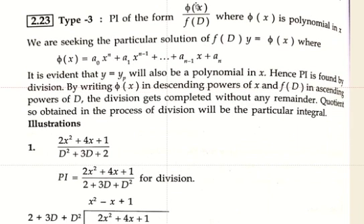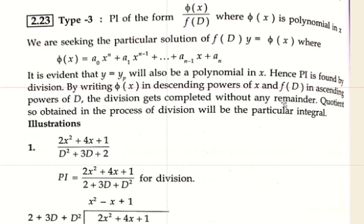In Type 3, the particular integral is of the form P(x)/f(D), where P(x) is a polynomial in x. We seek the particular solution of f(D)·y = P(x), where P(x) = a₀xⁿ + a₁xⁿ⁻¹ + ... + aₙ. It is evident that yp will also be a polynomial in x. Hence, the particular integral is found by division — by writing P(x) in descending power of x and f(D) in ascending power of D. The division completes without any remainder, and the quotient obtained is the particular integral.